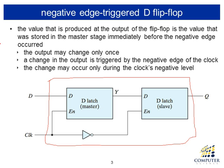Consider those two latches together as one big box — one flip-flop. We have D input, clock input, and one output Q. When the clock is low, the first latch is disabled, so the output of the first latch Y does not change according to any changes of D input. So Y is stable, not changing at all. Since the input to the second latch is not changing, the ultimate output Q does not change.